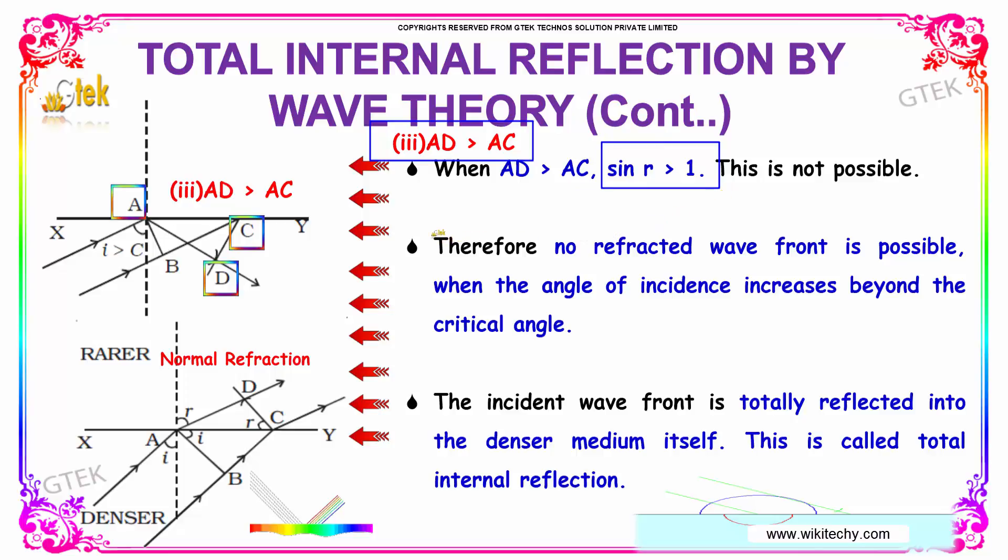Therefore, no refracted wavefront is possible when the angle of incidence increases beyond the critical angle. The incident wavefront is totally reflected into the denser medium itself. This is called total internal reflection. There won't be any refraction, only reflection will be happening.